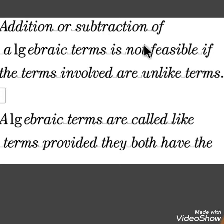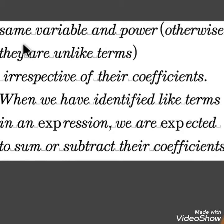Addition and subtraction of algebraic terms is not feasible if the terms involved are unlike terms. Algebraic terms are called like terms provided they both have the same variable and power. Otherwise, they are unlike terms, irrespective of their coefficients.